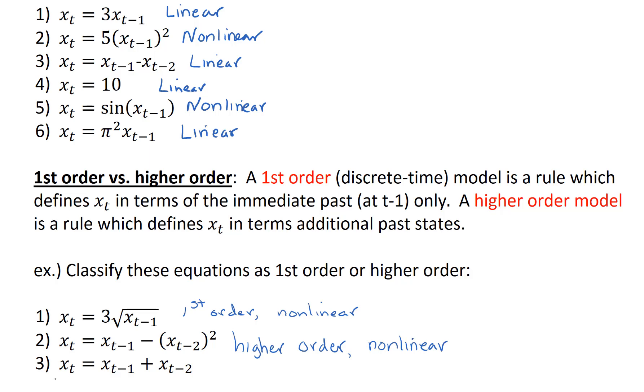Lastly, x sub t equals x sub t minus 1 plus x sub t minus 2. This is a higher order model, but it is linear because the highest power exponent is just 1. This is actually a very famous recurrence relation. It's defined as the Fibonacci sequence, and I'd like to talk about that in a bit more detail.